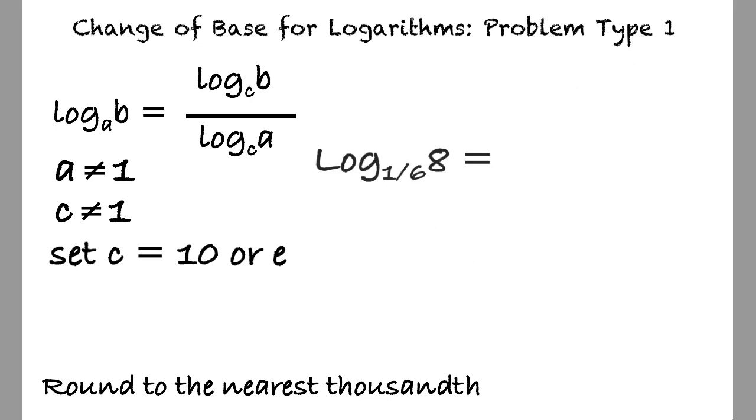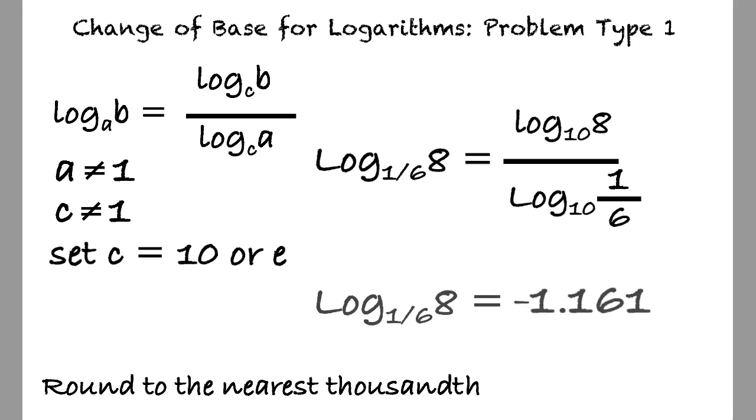Log base 1 sixth of 8, and we are again rounding to the nearest thousandth. Start by converting the logarithm into the change of base formula to result in log base 10 of 8 divided by log base 10 of 1 sixth. Solving this equation using the calculator yields negative 1.161 when rounding to the nearest thousandth.